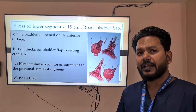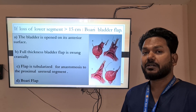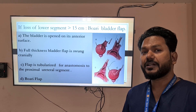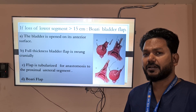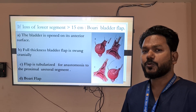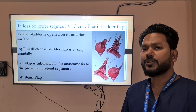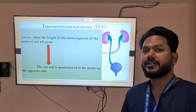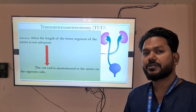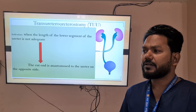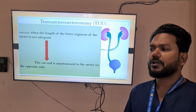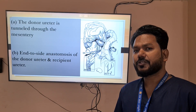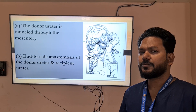The Boari flap is indicated when the lower segment is lost for more than 15 centimeters. The bladder is opened on its anterior surface, a full-thickness bladder flap is swung cranially, then tubularized for anastomosis to the proximal ureteral segment. Trans-ureteroureterostomy is indicated when the length of the lower segment of the ureter is not adequate; the cut end is anastomosed to the ureter on the opposite side, with the donor ureter tunneled through the mesentery to the recipient ureter in an end-to-side anastomosis.